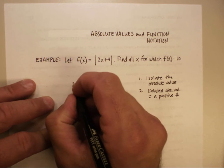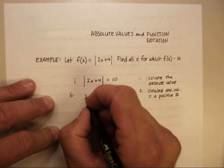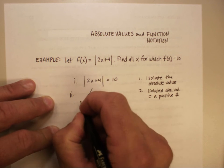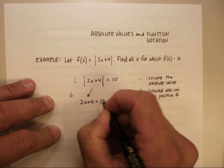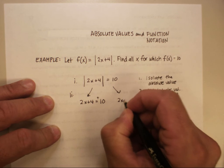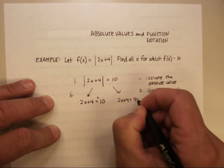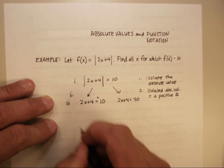So let's go ahead and solve this. I'll make the positive and negative case. So I'll say, 2x plus 4 is equal to the positive 10. Or, 2x plus 4 is equal to the negative case, or the negative 10. And let's solve those again individually and see what we get.